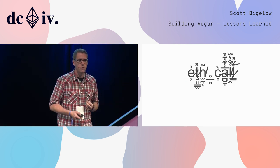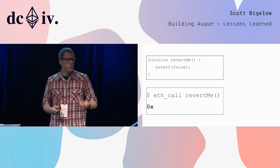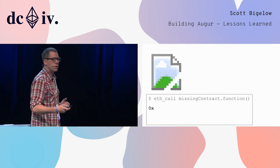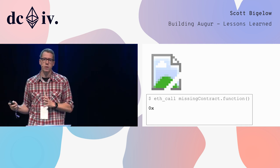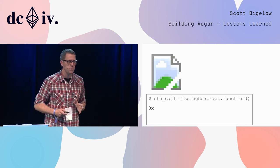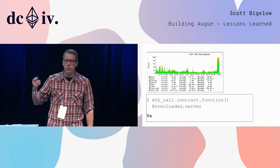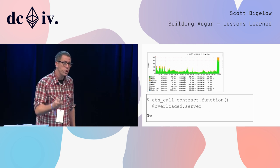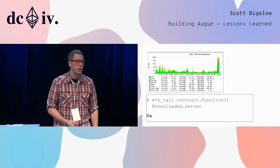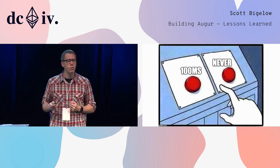We've also seen similar issues on the Geth RPC JSON-RPC interface. How about ETH call? When you call a function that reverts via ETH call, you get 0x. When you call a function on a missing contract — either because it will never exist or because you're talking to a node that isn't at the block height that has that contract deployment — you get 0x. When you talk to a server that is overloaded for a contract function that would succeed, you get 0x. So we're left wondering: should I retry in 100 milliseconds, or should I never talk to you again because this is an unrecoverable error?